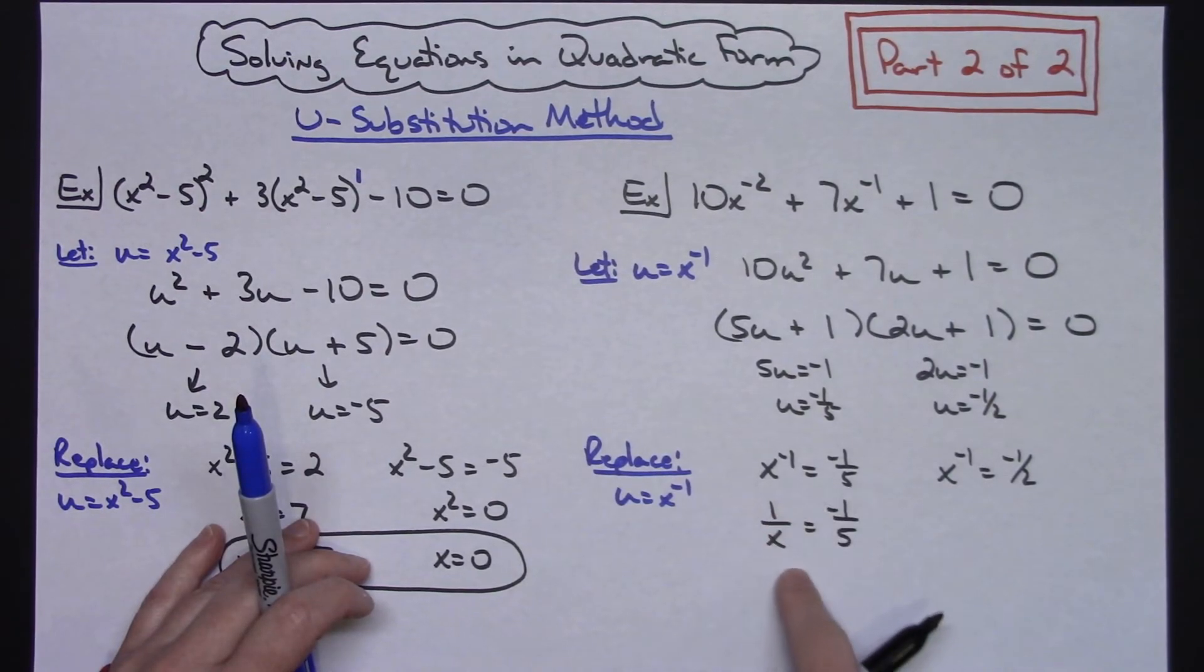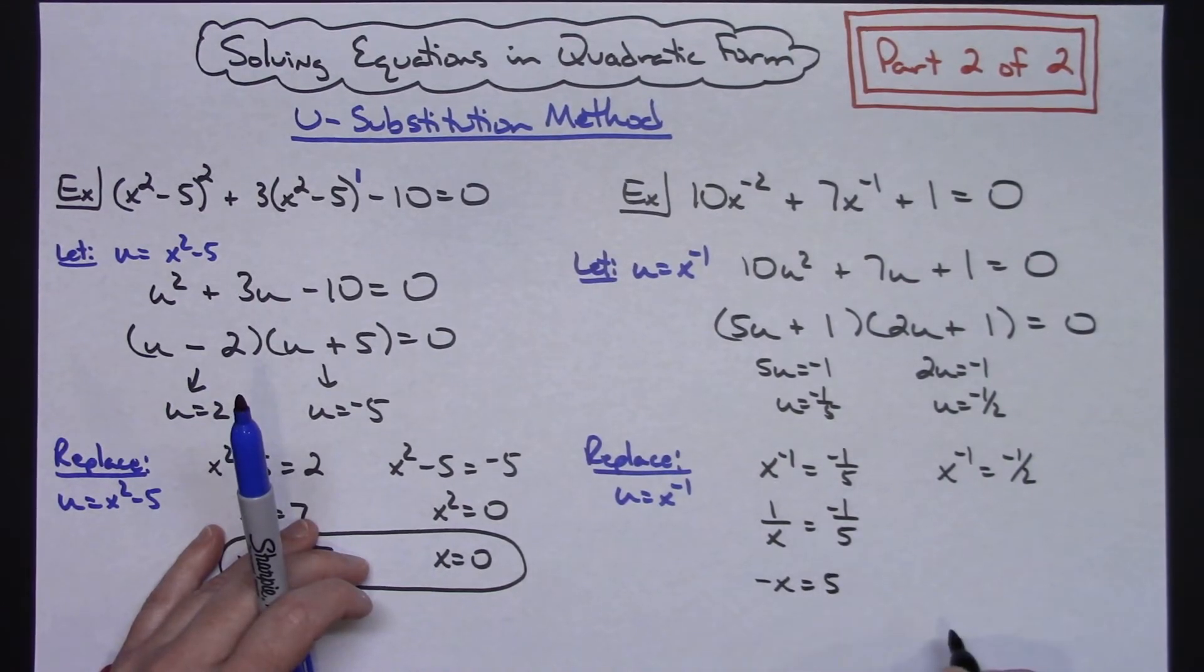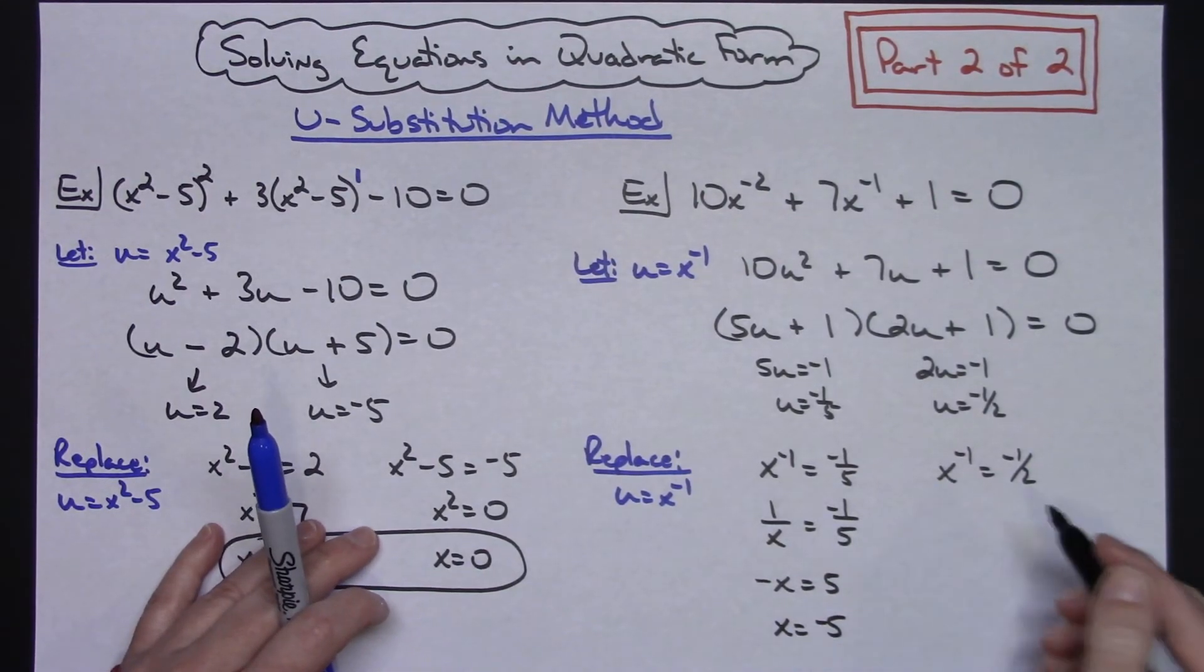Now I have a proportion and I can just cross multiply down. If I cross multiply down, I get negative x equals 5. Divide both sides by negative 1. So x equals negative 5. I think that's probably the simplest way to do that.